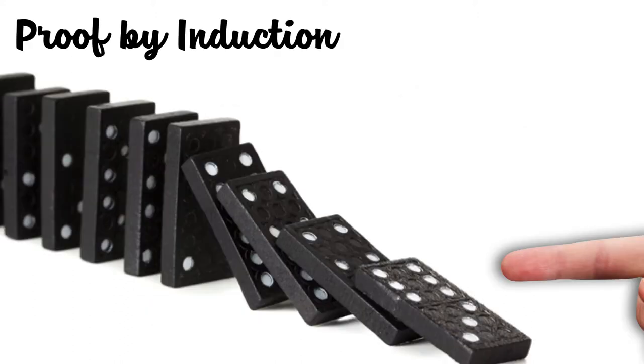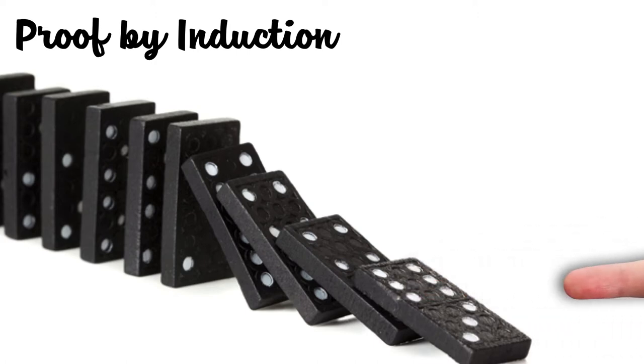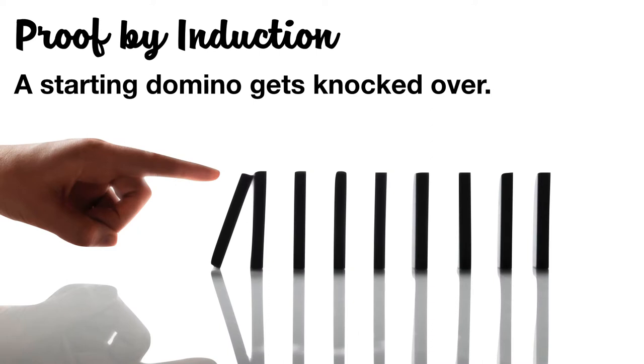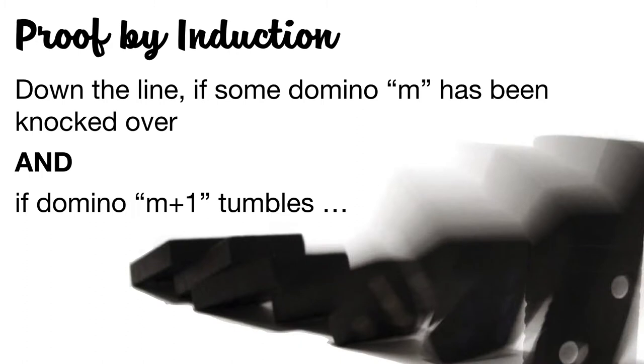To prove this statement, we'll use something called proof by induction. Induction is like creating a domino effect, where you start by knocking over an initial domino, and watch as dominoes fall going down the line, all the way to a domino that we'll call M being knocked over. And hopefully, in turn, that makes the next domino, M plus one, tumble.